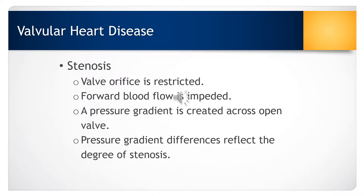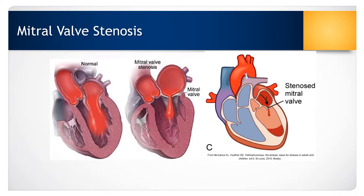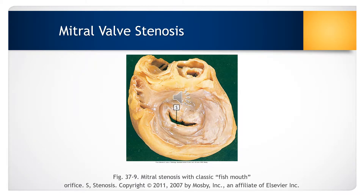The pressure on either side of an open valve should be equal. But when there is a valve that has stenosis, the valvular opening is typically smaller, so the forward flow of blood is impaired and it creates a difference in pressure on the two sides of the valve. The amount of stenosis is seen in the pressure differences — the higher the difference, the greater the stenosis. The stenotic mitral valve takes on a fish-mouth shape because of the thickening and shortening of the mitral valve structures.